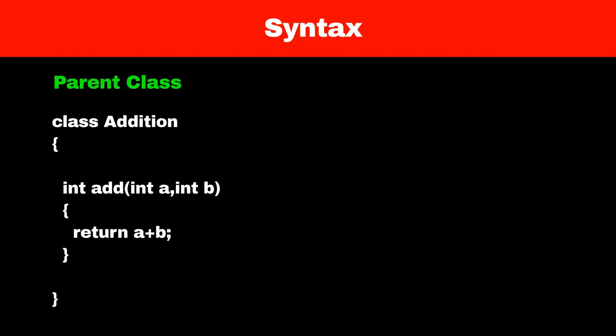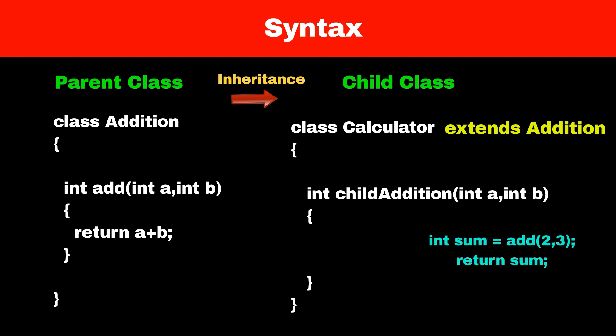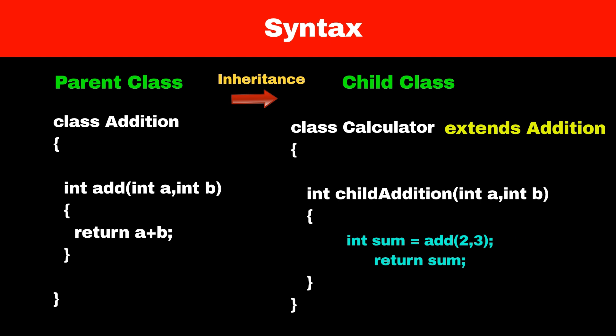Now let's understand the syntax of inheritance. First let's define a normal class called addition which will have an add method. This method takes two variables as parameters and returns their sum. Now let's define another class called calculator. Its syntax is like a normal class and it will have variables and functions like a normal class. If calculator wants to use a method defined in the addition class, we have to use inheritance. To inherit the calculator class from the addition class, we use the extends keyword followed by the name of the parent class, which is the addition class. Now all the methods and variables — except private ones — of the addition class are accessible in the calculator class without object creation. We can call the add function in a child add method which calculates the addition of two numbers and returns its value.